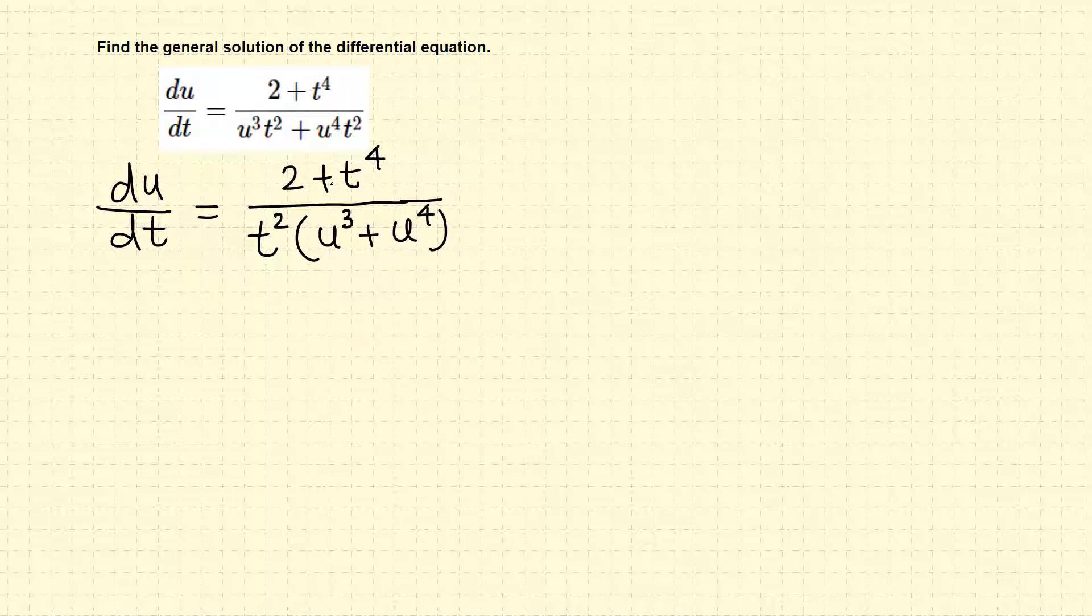So 2 plus t^4 and t squared that's function of t, and u^3 plus u^4 that's function of u and this is in time. So it looks like we can separate the variables. When we write this in differential form we can simply move dt to the other side.